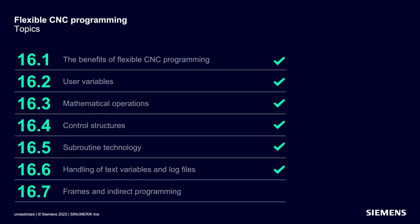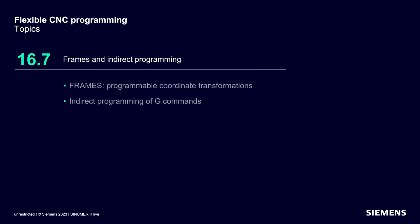In my last video, I already mentioned that I'd like to present a few more interesting CINEMERIC CNC language commands. So today, we'll first look at programmable coordinate transformations, so-called frames. The second part of the video is then about the indirect programming of G commands. This allows CNC programs to be designed even more flexibly.